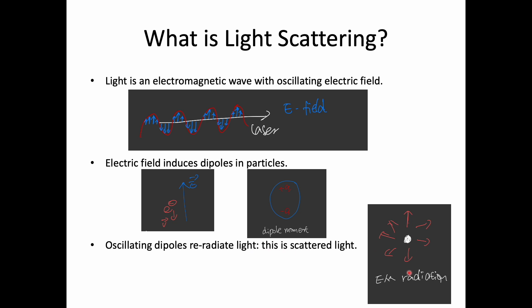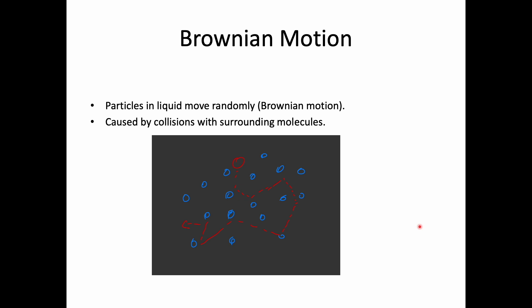The next physical phenomenon to explore is Brownian motion. When particles are in a liquid, they are surrounded by tiny, smaller, faster-moving solvent molecules. These solvent molecules constantly bombard the particles, and these collisions cause the particles to move randomly and constantly in the liquid — this is called Brownian motion.